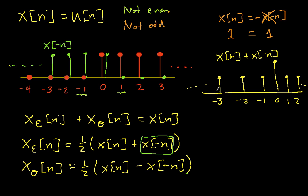Multiplying by one half gives me the even component x_e(n). The values that were 1 become 1/2, and the value at n equals 0 becomes 1. This signal is indeed symmetric about n equals 0, satisfying the requirements for an even function.